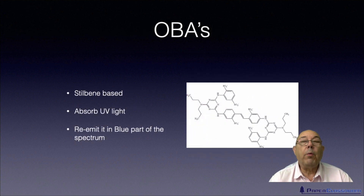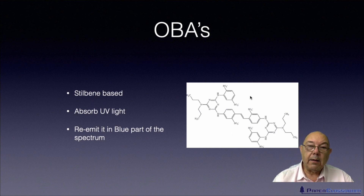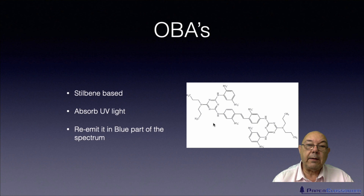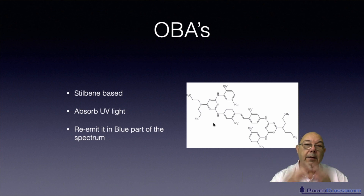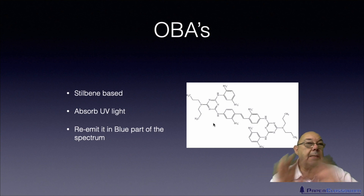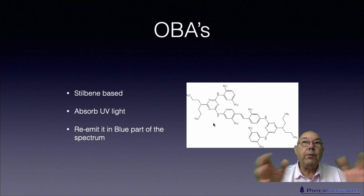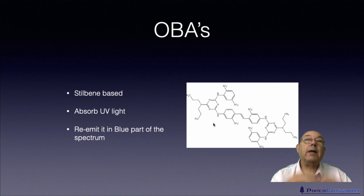And then we come to OBAs — Optical Brightening Agents. As you can see, these are very complex molecules. They are based on a particular molecule called stilbene, and they rely on having lots of double bonds. What they do is take in ultraviolet light, steal some of the energy, and then give it back out into the blue part of the spectrum. And the human eye confuses blue with white, so it makes things with OBAs in them look whiter.